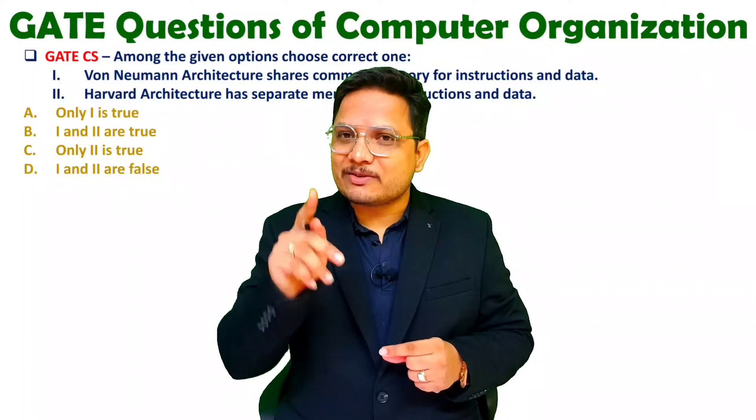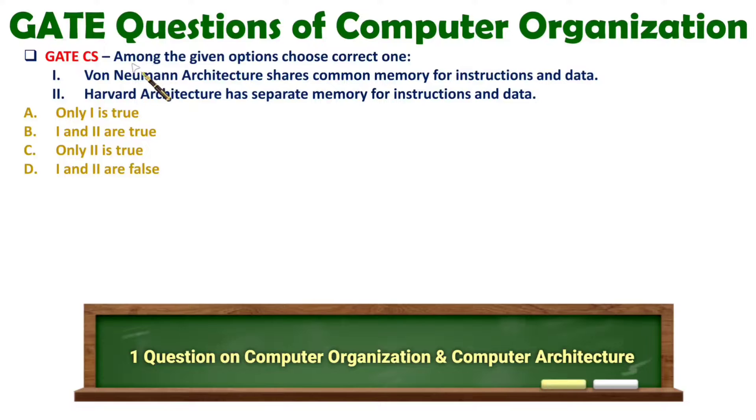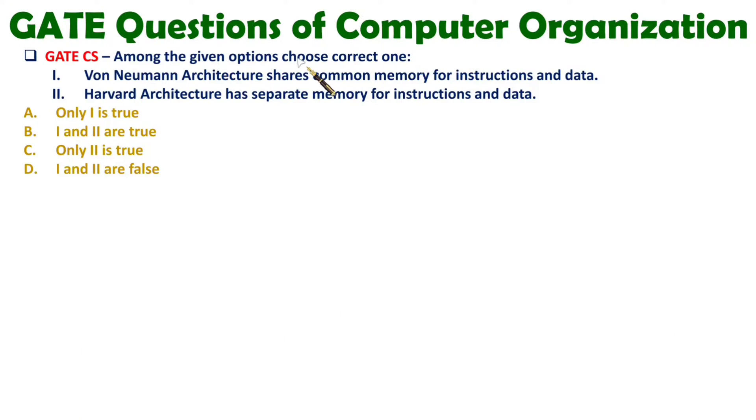So let us see first question over here. If you observe, in the first question among the given options choose correct one. So first statement is Von Neumann architecture shares common memory for instructions and data. Is it correct? Yes, obviously my dear students. Von Neumann architecture is having common memory for instructions and data. Remember this.